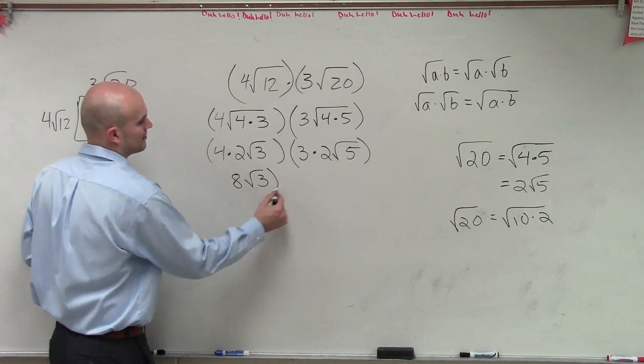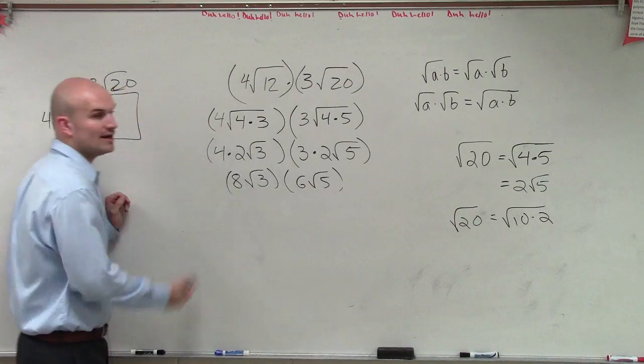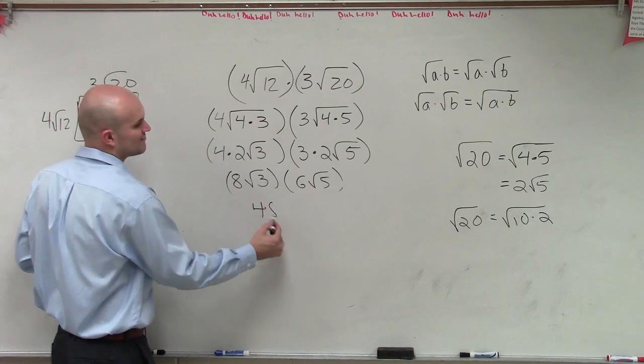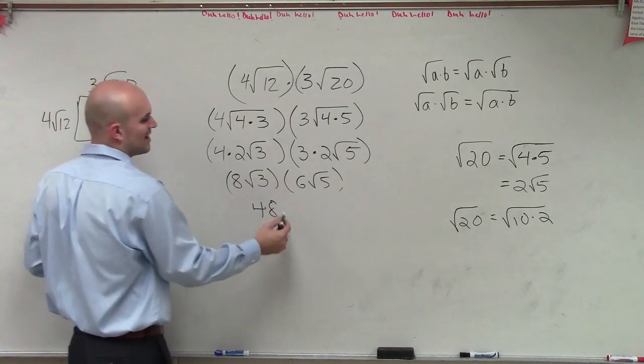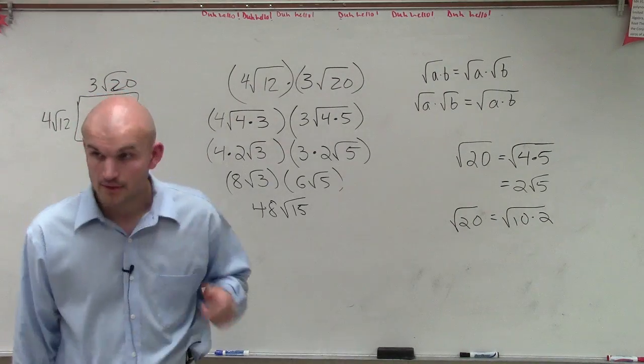Now, I just multiply this. So I get 8 square root of 3 times 6 square root of 5. And then I just multiply. 8 times 6 is 48. Square root of 3 times square root of 5 is square root of 15. And there you go.